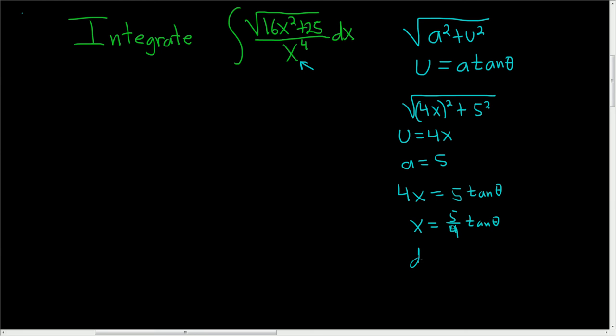Now we'll compute dx. So dx is 5 over 4 secant squared of theta d theta. We're almost there. We have figured out x, we have figured out dx. The last thing to work with is this numerator here. So let's carefully write it down like this.